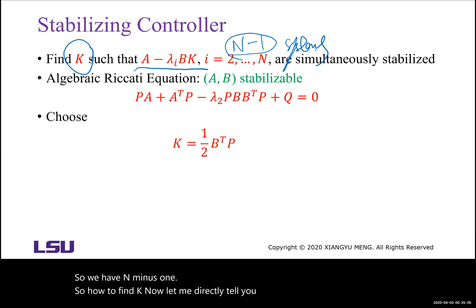You can solve the algebraic Riccati equation. If A and B is stabilizable, then we pick Q. Here you pick any Q as a positive definite matrix. Then you solve.